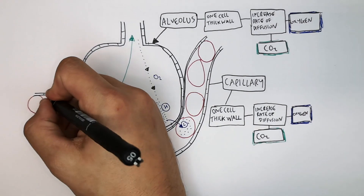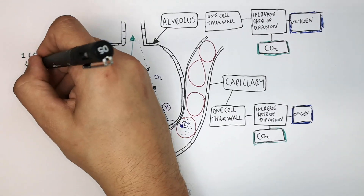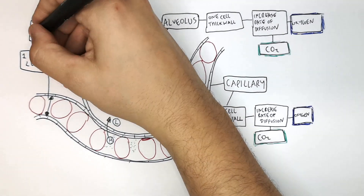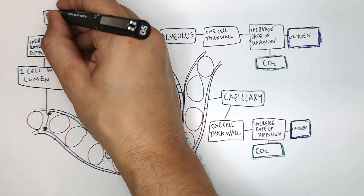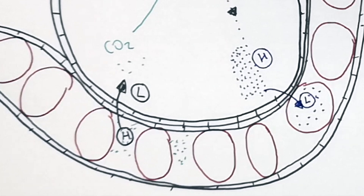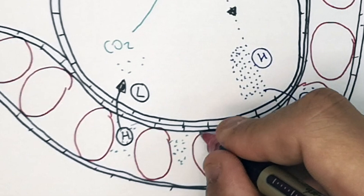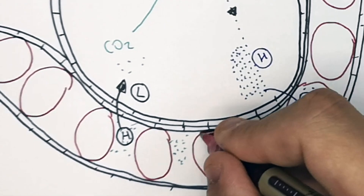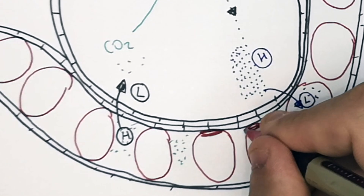The capillary is one cell wide — it is a one-cell-wide lumen, so the tube is one cell wide. This is so it increases the rate of diffusion, as oxygen travels less distance. The red blood cell is right up against the wall of the capillary, so the oxygen can diffuse straight through the wall of the capillary without traveling further than it needs to through the blood.